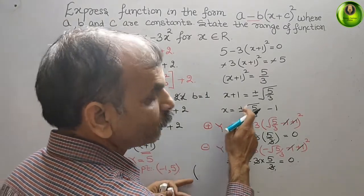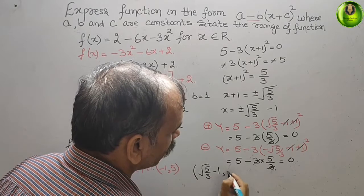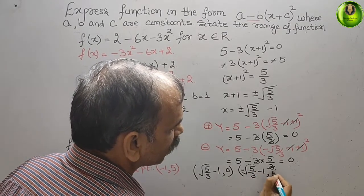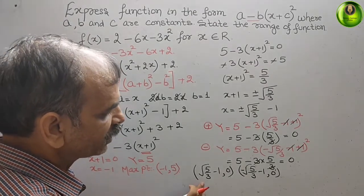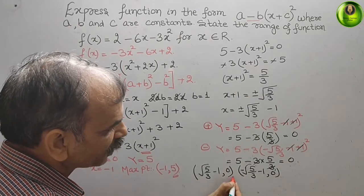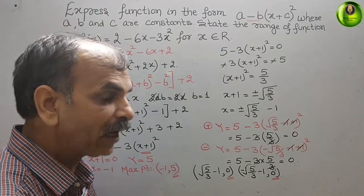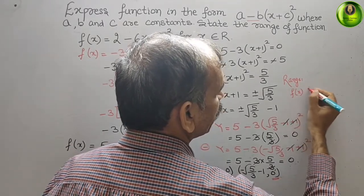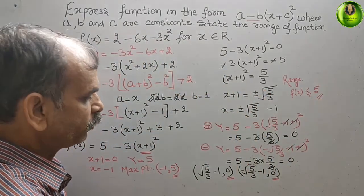Therefore the three coordinates are: (root(5/3) minus 1, comma 0), (minus root(5/3) minus 1, comma 0), and the maximum point (minus 1, comma 5). Looking at the y-axis values — 5, 0, and 0 — 5 is the maximum point and after that it reduces. Therefore the range of the function is f(x) less than or equal to 5.